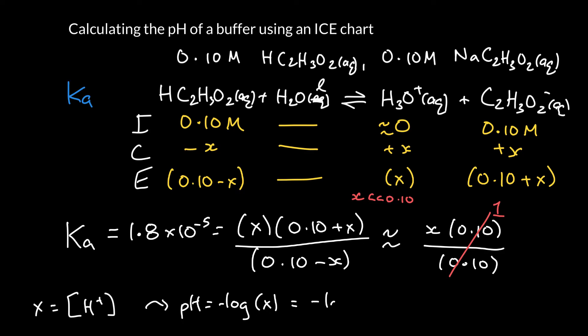So the pH is the negative log of that value. And if we take the negative log of 1.8 times 10 to the minus 5, we get the pH of our buffer. And I get that to be 4.74.